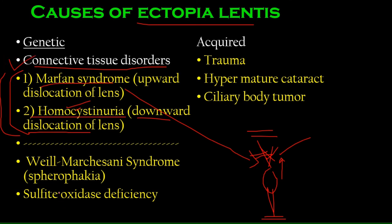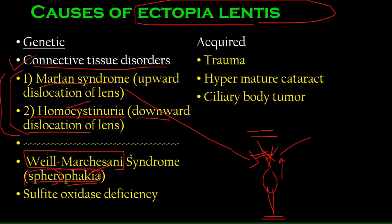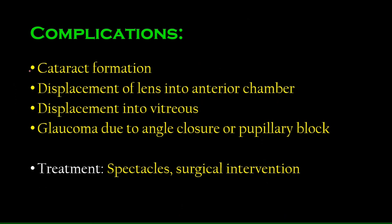Other causes include microspherophagia — a very small, spherical lens that can move out of the pupil into the anterior chamber or shift more than usual. Weill-Marchesani syndrome involves a small spherical lens and can lead to ectopia lentis. Sulfite oxidase deficiency can also lead to ectopia lentis.